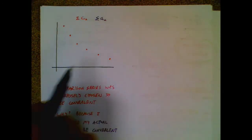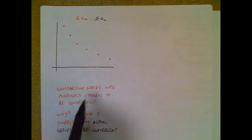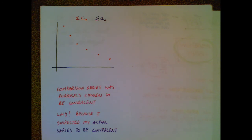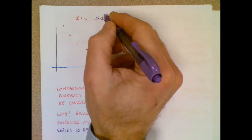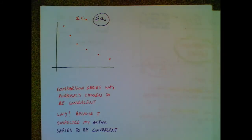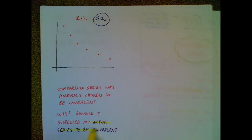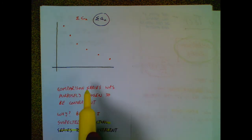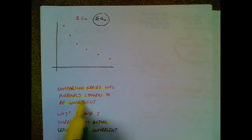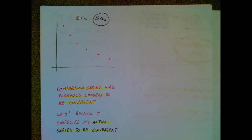I'm going to paint this picture using a graphic. In the situation I'm talking about here, we're going to suspect that our actual series is convergent. The fact that I suspect convergence is going to be a big deal. That means when I choose a comparison series, I should choose one that is also convergent. If I suspect my actual series to be convergent, I'm going to choose a comparison series that is also convergent — that's one of the big clues I need to take into account.